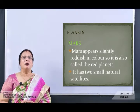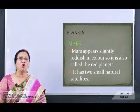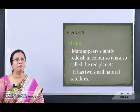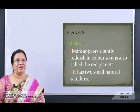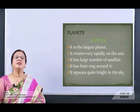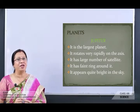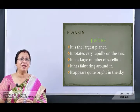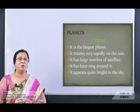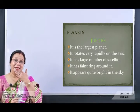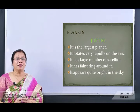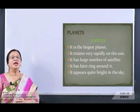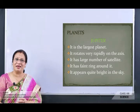The next planet is Mars. Mars appears slightly reddish in color, so it is also called the red planet. It has two small natural satellites. Jupiter is the largest planet of the solar system. It rotates very rapidly on its axis. Jupiter is so large that about 1300 Earths can fit inside it. It has a large number of satellites and a faint ring around it. It appears quite bright in the sky.